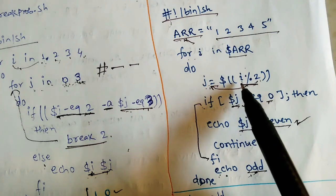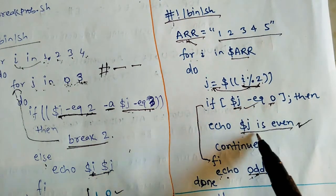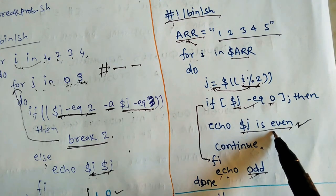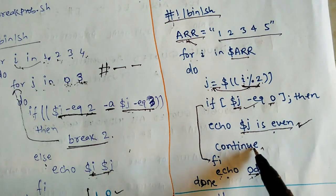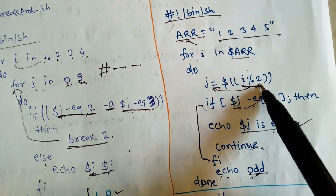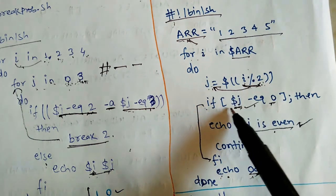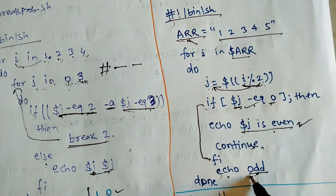I value 2 will be true. 2 mod 2 is 0. If value will be true, then if condition is true. If value is true, then $j is even. Then we will continue. Continue will execute. Next value 3, 3 mod 2 is nothing but 1, if condition true then odd. Once again odd will be printed.